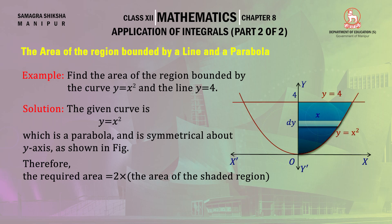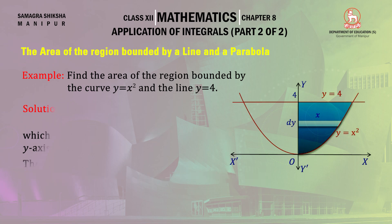Since the parabola is symmetrical about the y-axis, we multiply by two to get the total full area. So two times the area of the settled region gives the required area. The area of the settled region is given by the definite integral from 0 to 4 of x dy, where x dy is the area of the horizontal strip, with x expressed in terms of y.